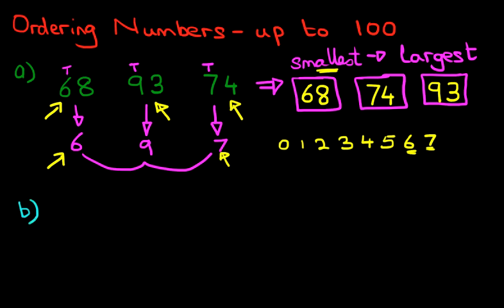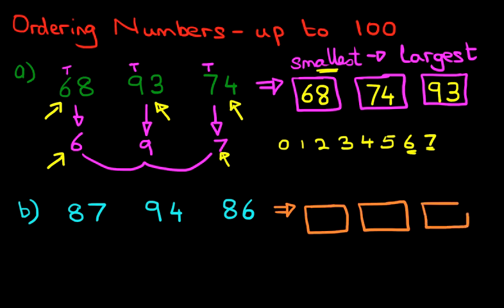Now, let's have a look at our second example. Suppose we have these numbers here: 87, 94, and 86. And this question is asking you to rewrite these numbers. Let's just draw the boxes in first. There are three numbers. Therefore, we've got three boxes. And in this question, it's asking you to write from the largest to the smallest number.